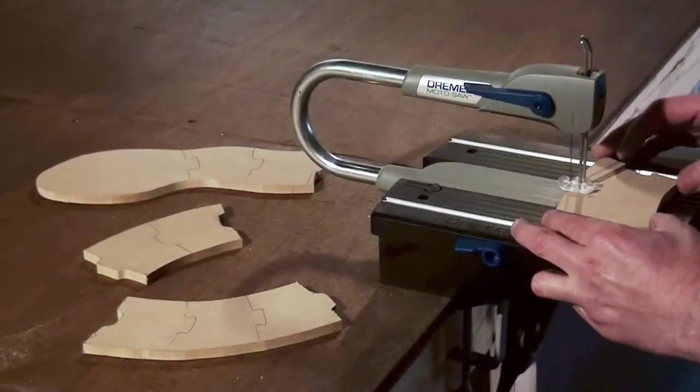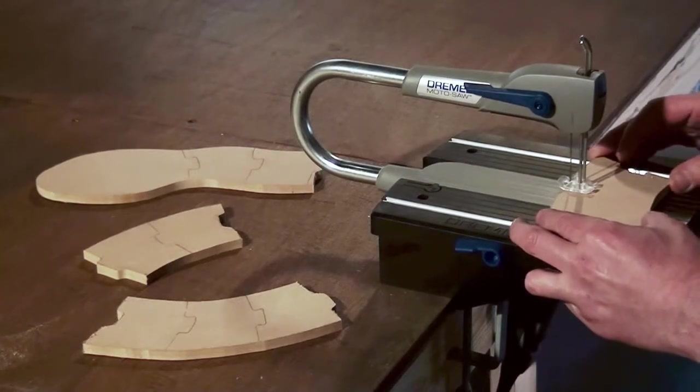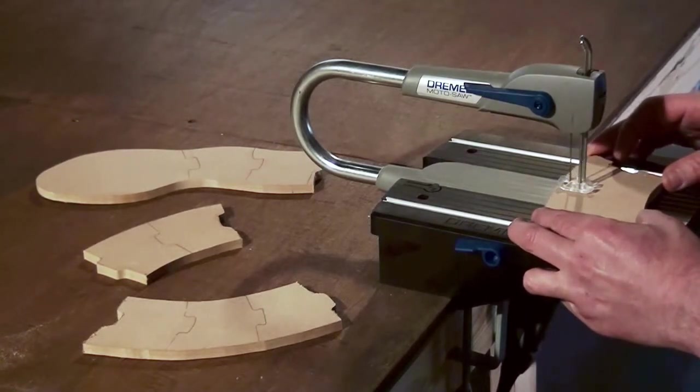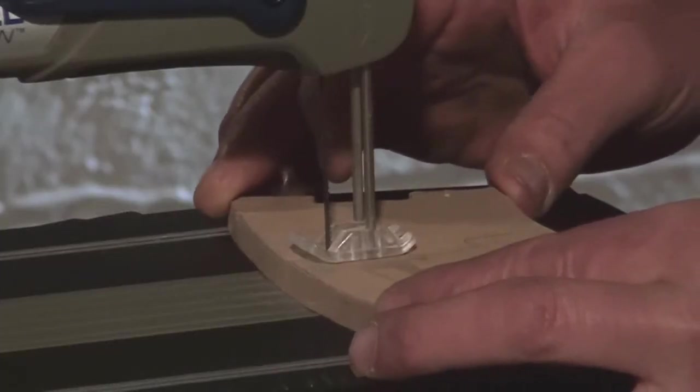Now continue to cut out the remaining segments of the snake following your drawn lines, including the interlocking jigsaw pieces, using your Dremel Motosaw and the fine wood cutting blade MS-52.